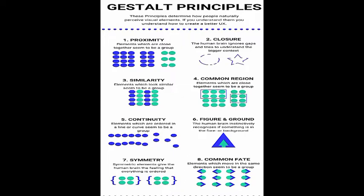Next we have the law of continuity. Elements which are ordered in a line or curve seem to form a group. If you look at that diagram, you can easily find which elements are in a curve shape and which are in a straight line portion.